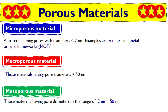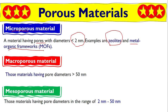Let's understand the differences. A microporous material is when you synthesize a material having a pore size or pore diameter less than 2 nanometers. That material is categorized as microporous. The classic example is zeolites, which dominate the market for porous materials. A more recently developed material is called MOF — Metal-Organic Framework — which is the second major porous material class.